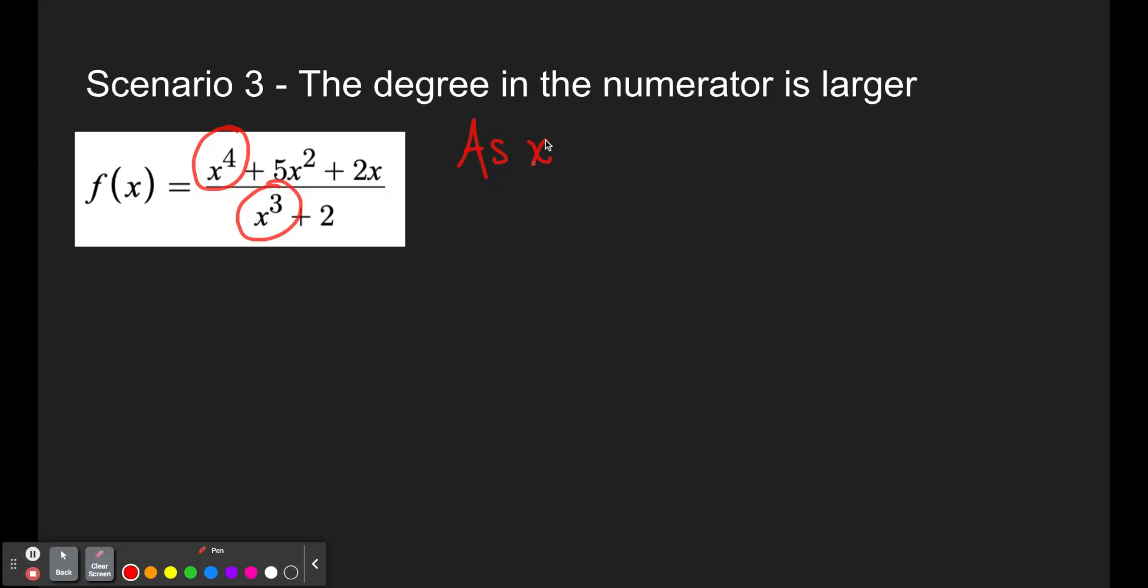As always, we're trying to see what happens as x approaches infinity or as x approaches negative infinity. In this scenario, we can see that f of x will be approximately x to the fourth over x to the third as x is getting closer and closer to infinity, because as x is huge,